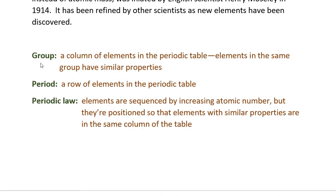Here are some vocabulary words that apply to the periodic table. First, the word group. A group is a column of elements in the periodic table, and elements that are in the same group have similar properties. So the columns are called groups.